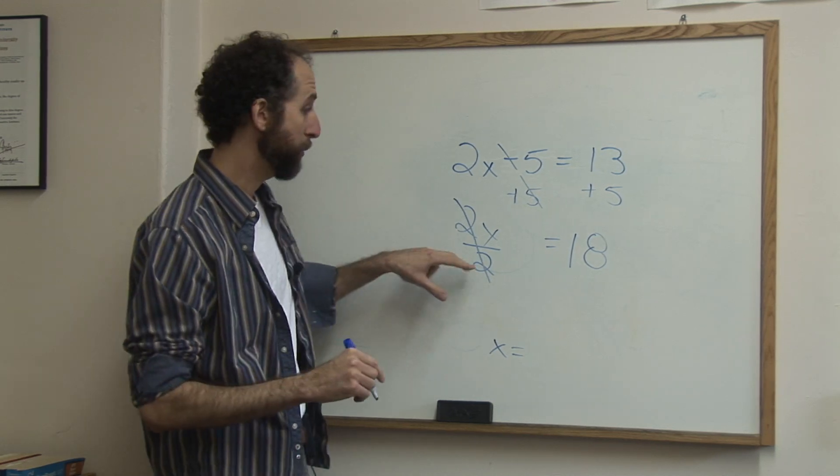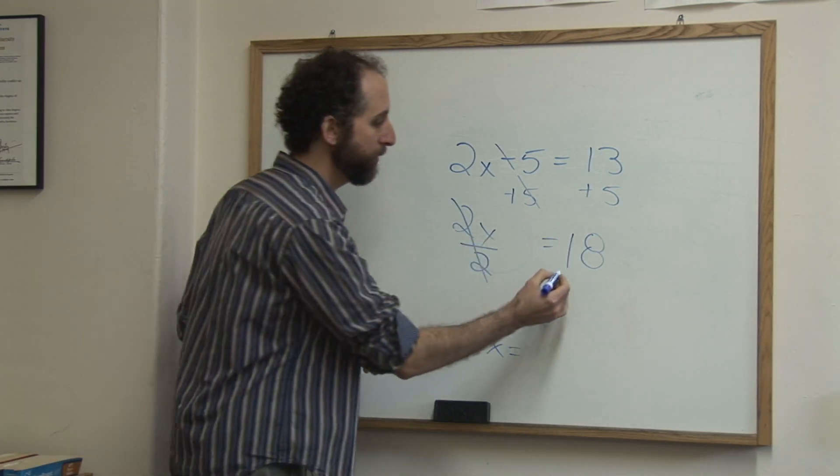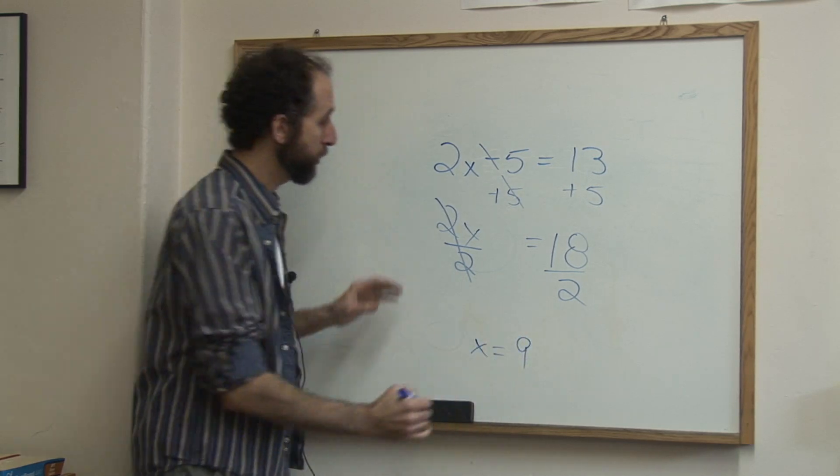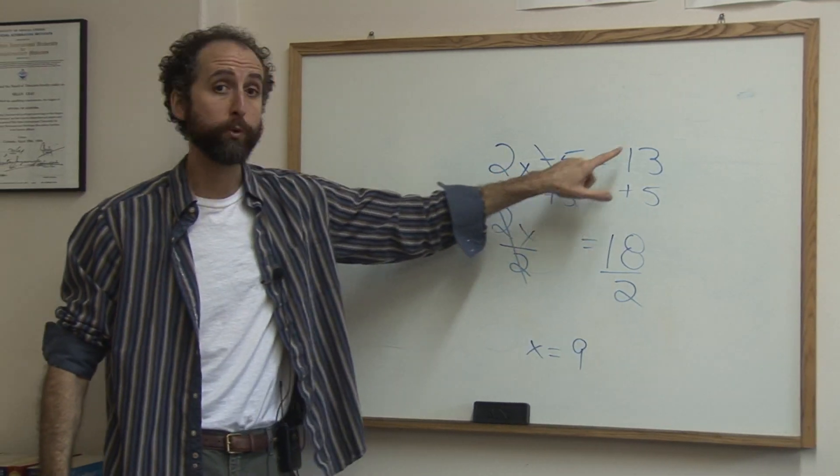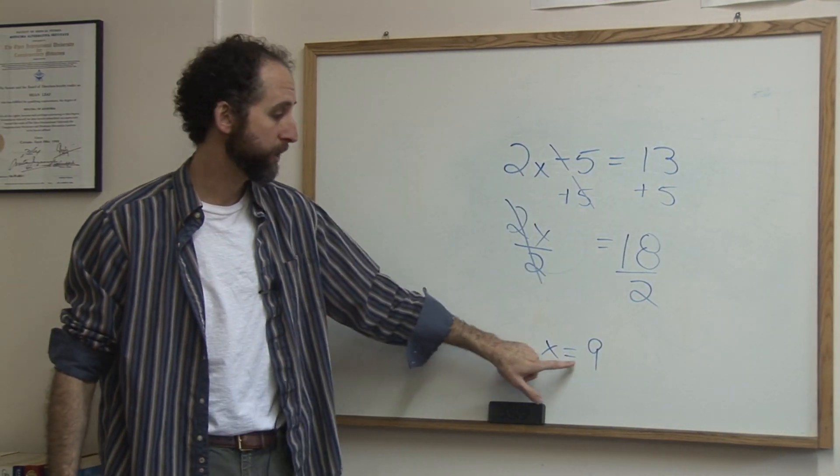So 18 divided by 2 is 9. So in this equation, 2x minus 5 equals 13, we get x equals 9. All right. Thank you.